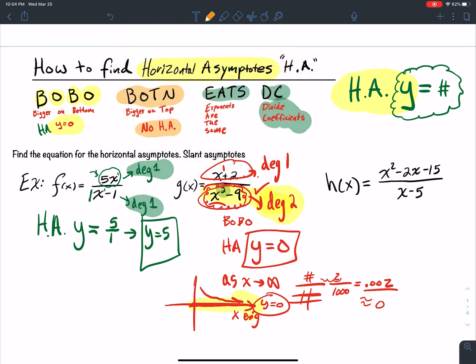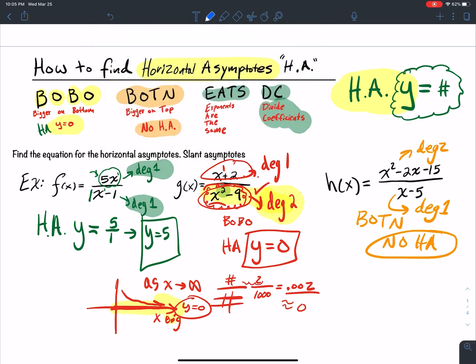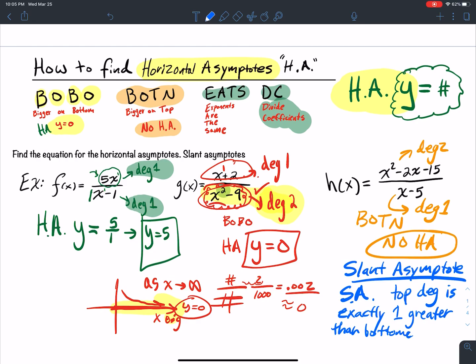The last one, the numerator degree is degree 2. The denominator degree is degree 1. We're bigger on top. What does bigger on top mean? That there's no HA. Bigger on top means that there's no HA. Now technically there is an asymptote, and it's something we haven't talked about, but I'm going to talk about right now. There is a slant asymptote. A slant asymptote, I like to call it my SA.